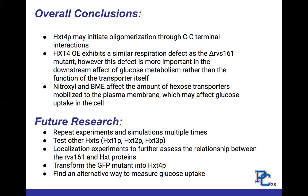To wrap up our overall conclusions: what Kobe found was that the HXT4 protein may initiate oligomerization through C-to-C terminal interactions. What I found was that the HXT4 over-expresser exhibits a similar respiration defect as the RVS161 delete mutant; however, this defect is more important in the downstream effect of glucose metabolism rather than the function of the transporter itself. Similarly, nitroxyl and BME affect the amount of hexose transporters mobilized to the plasma membrane, which may affect glucose uptake in the cell.